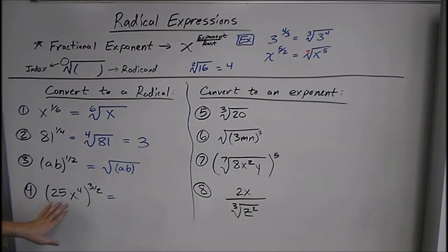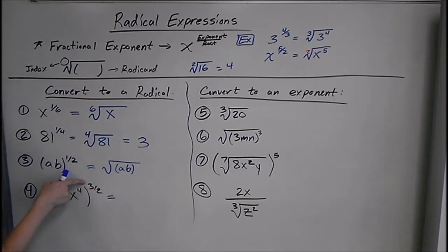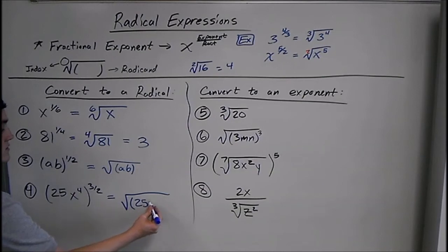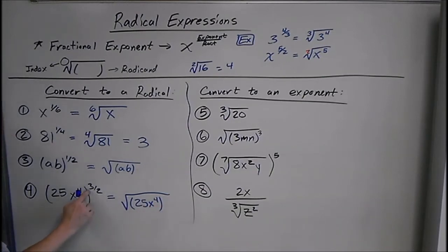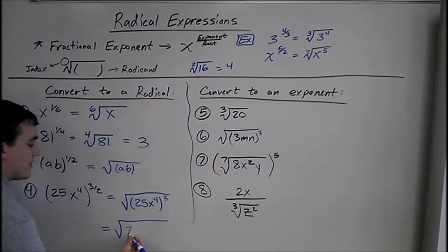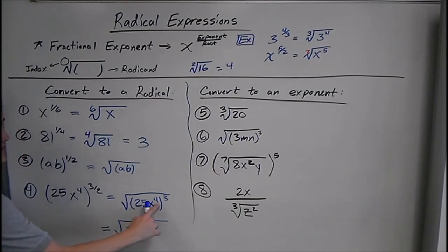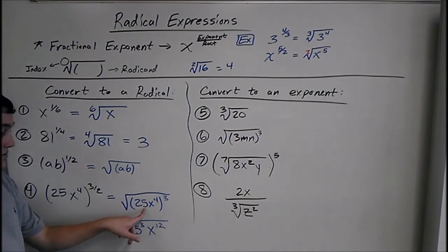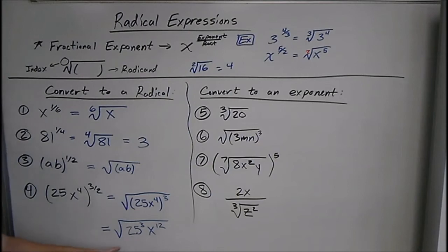For the next one, first you want to convert this, because you can simplify it after. We look at our exponent and our root. It's the square root of all of 25x to the fourth, cubed. You can simplify this: 25 cubed we'll leave as 25 cubed for now, and x to the fourth cubed is x to the twelfth. You could do more with that, but I'll be teaching you how to simplify this further in one of the next videos.